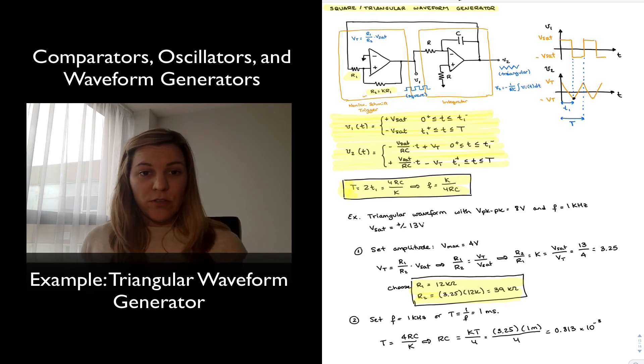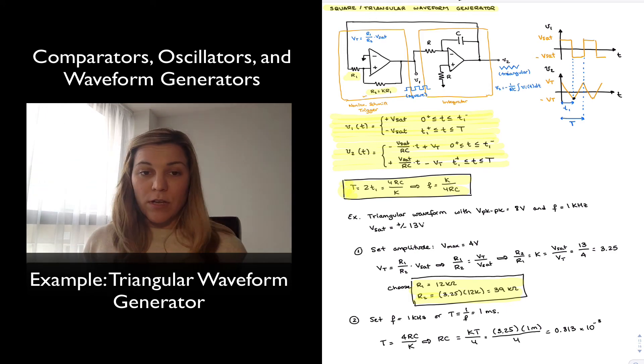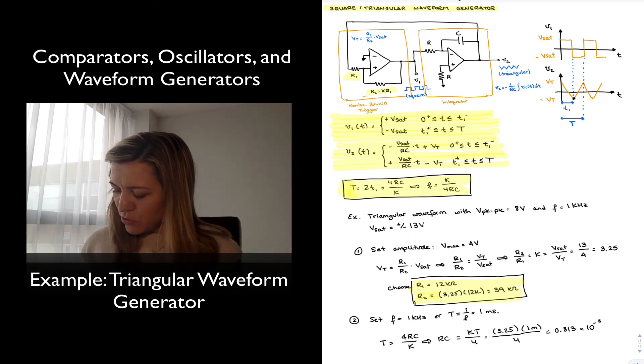And again, this is just the product of R times C, so I can choose different values of R and C that are going to give me around that value. A reasonable selection would be to select my capacitor. And I typically will select my capacitor first because there are less available values of capacitance than there are of resistance. But if I choose my capacitor equal to 12 nanofarads, for example, then my resistor will come out to be 68 kilo-ohms by substituting that expression.